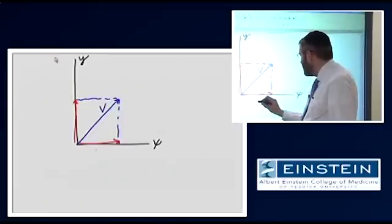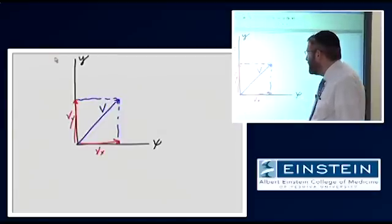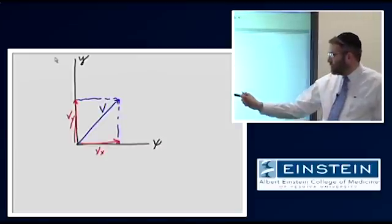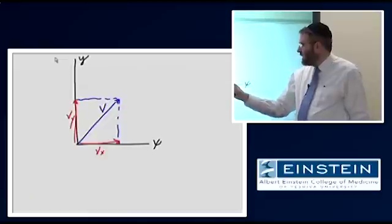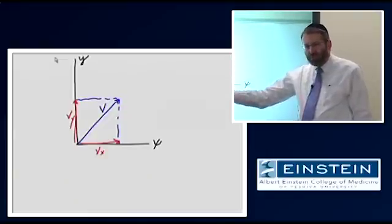vx and vy, so these component vectors, if we add them together, we get the blue vector v.